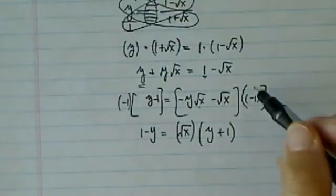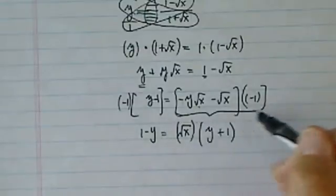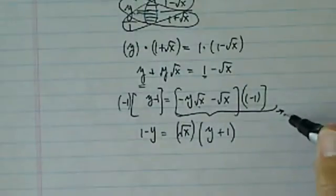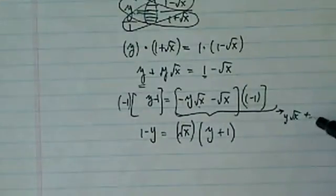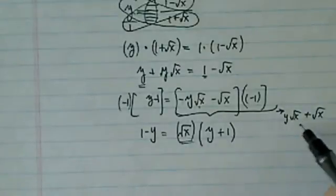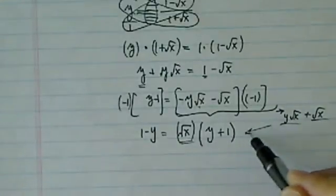So I have positive y + 1. This whole thing really becomes y√x + √x. And then pulling the √x out, you'll see that's equal to this.